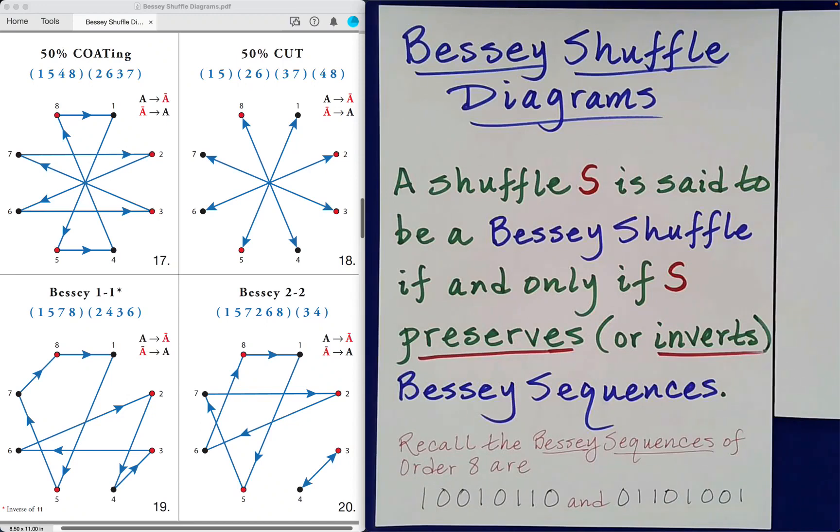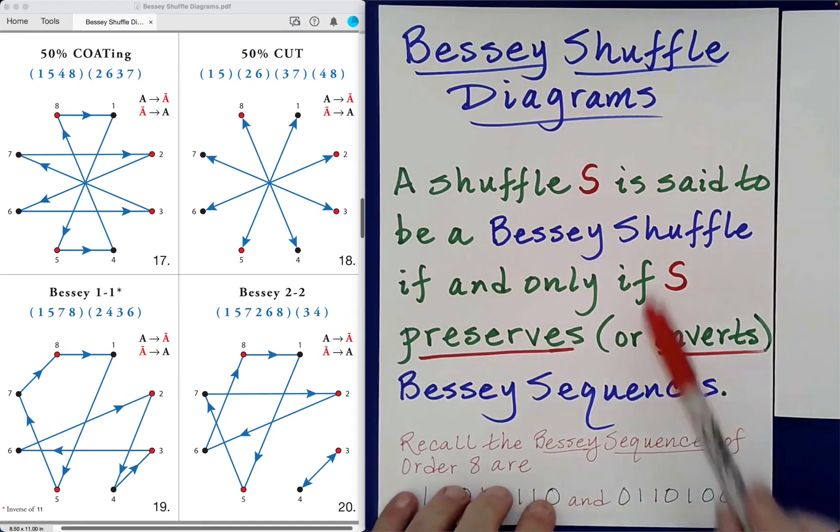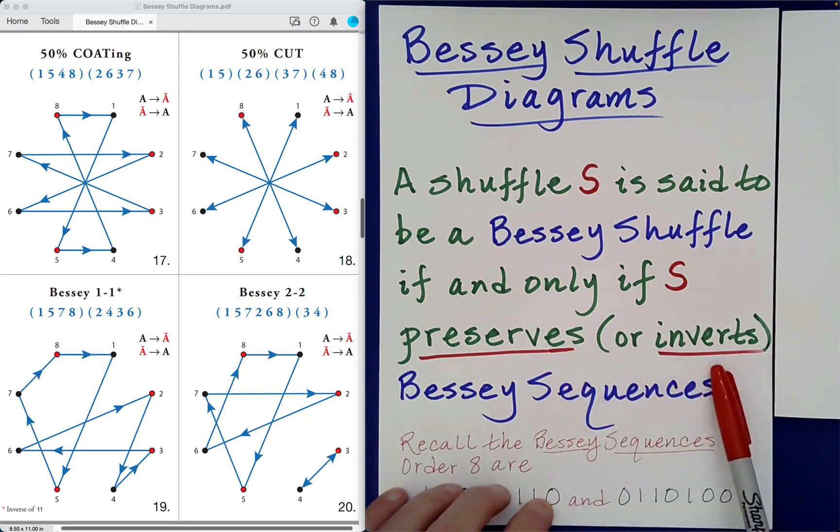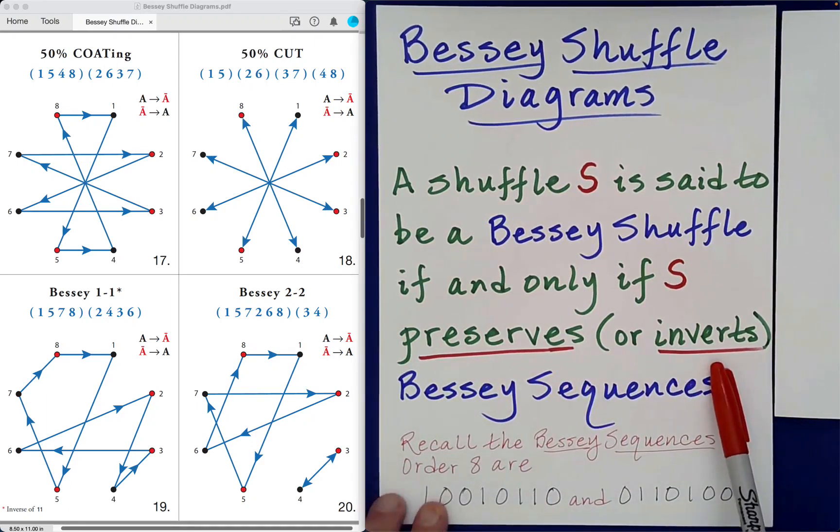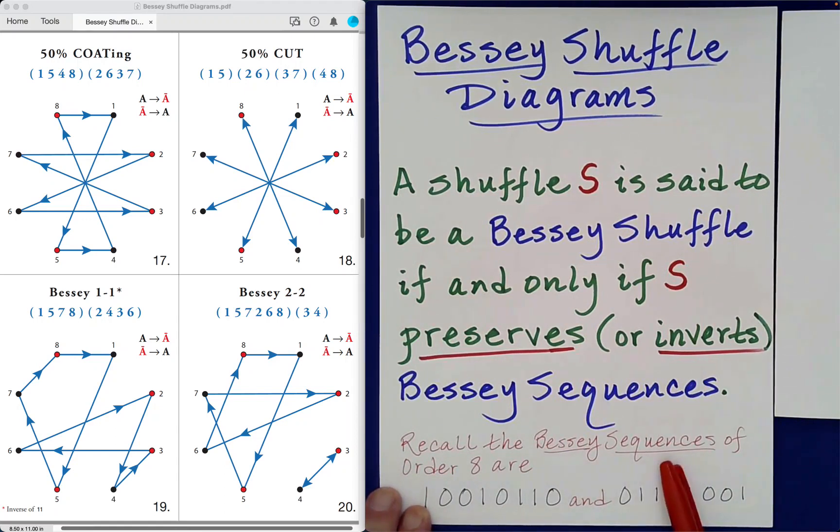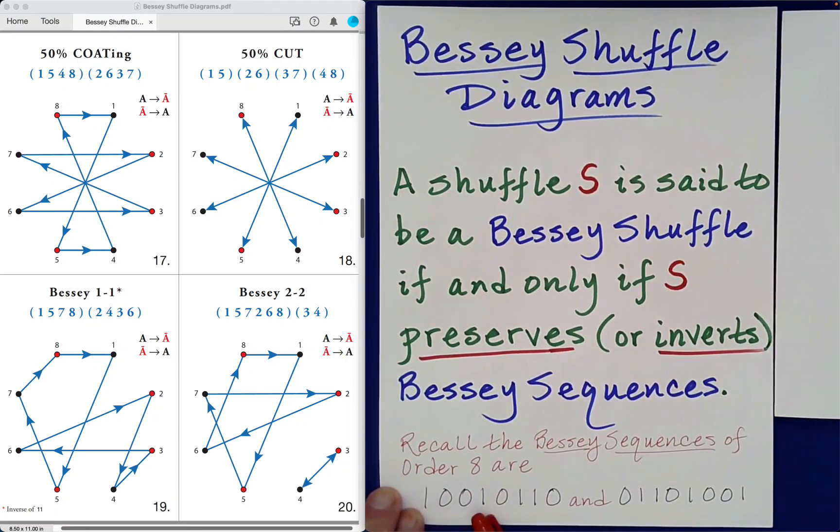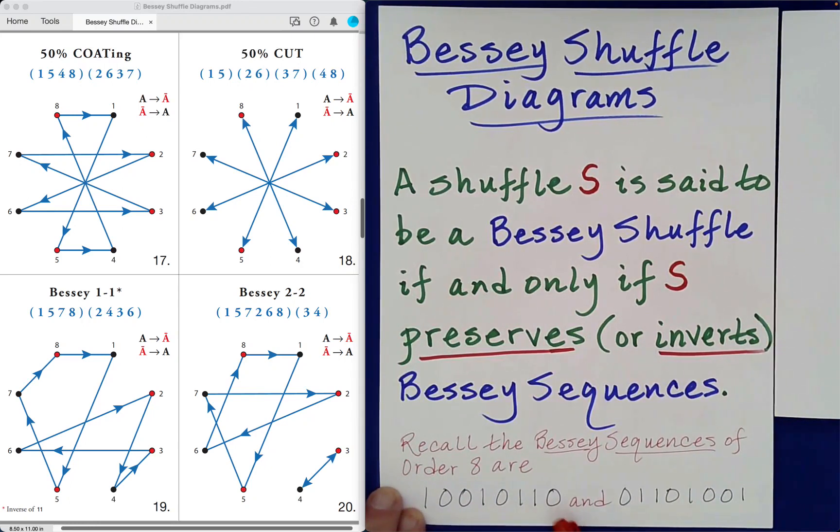This is the fifth video dedicated to Bessie Shuffle Diagrams. As a reminder, a shuffle S is said to be a Bessie Shuffle if and only if S preserves or inverts Bessie sequences. Recall the Bessie sequences of order 8 are 1 0 0 1 0 1 1 0 and its inversion 0 1 1 0 1 0 0 1.